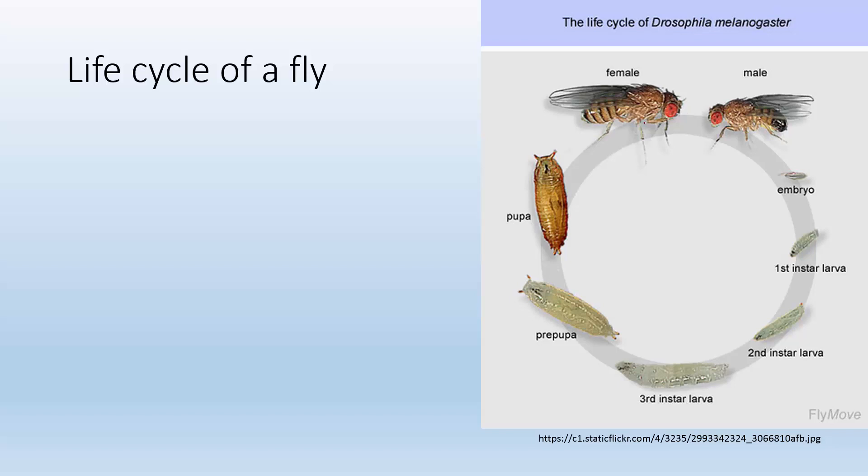So first off let's talk about the life cycle of the fly. All right, so the birds and the bees, let's talk about the flies and the maggots. You got a female fly, you got a male fly, and they do the things that flies do and they have a fertilized egg we call an embryo and it gets laid. Now how does this embryo become another adult fly?